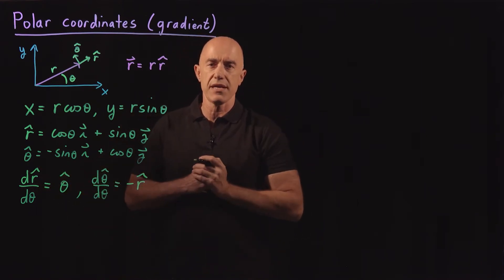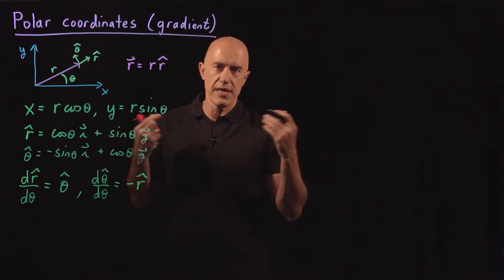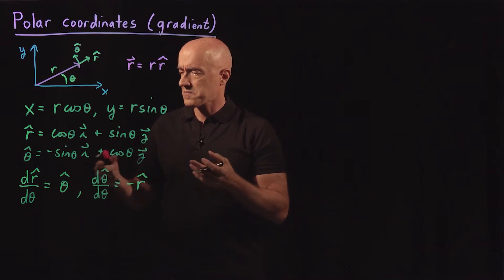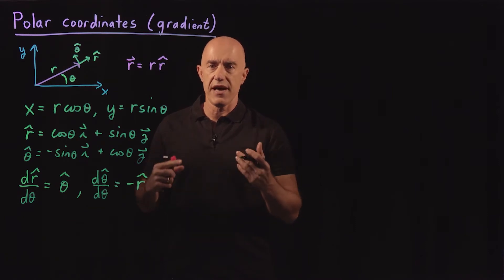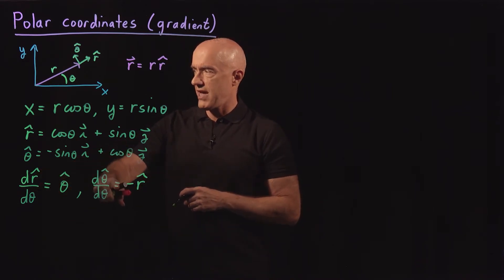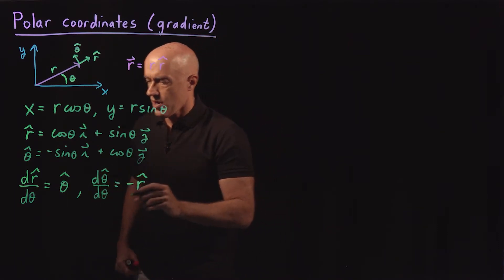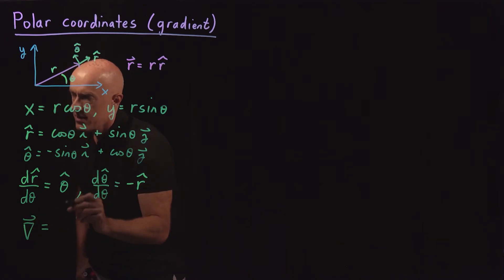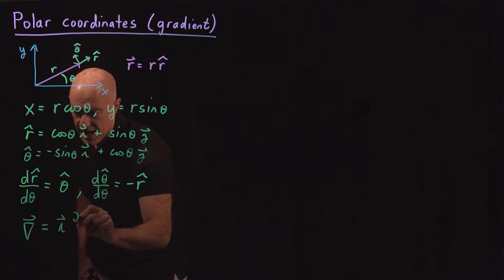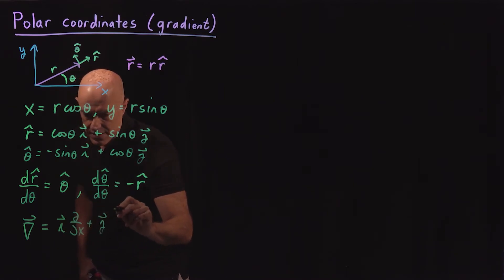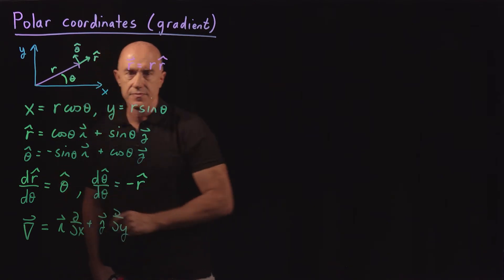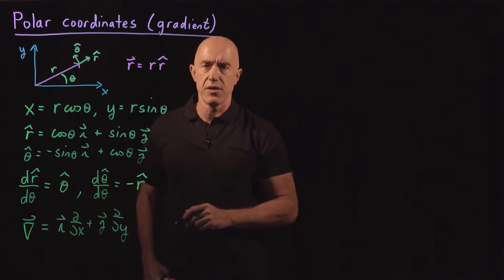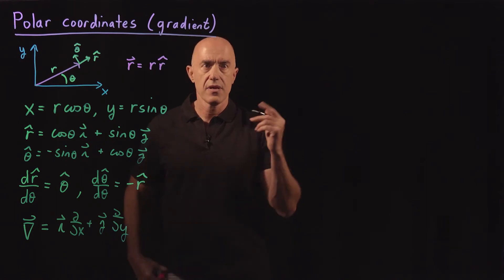This causes complications when we try to compute different differential operators. We always have to be careful that we have to differentiate the unit vectors. The differential operator I want to do here is the gradient operator, which in Cartesian coordinates is î (∂/∂x) plus ĵ (∂/∂y) in two dimensions. We want to get a corresponding form for this gradient operator in polar coordinates.